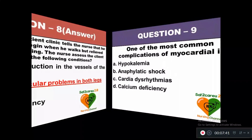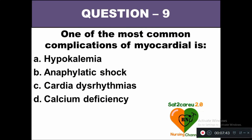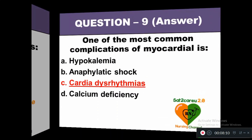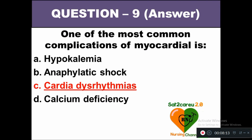Question 9: One of the most common complications of myocardial infarction is: option A hypokalemia, option B anaphylactic shock, option C cardiac dysarrhythmias, option D calcium deficiency. The right answer is option C — cardiac dysarrhythmias is one of the most common complications of myocardial infarction.